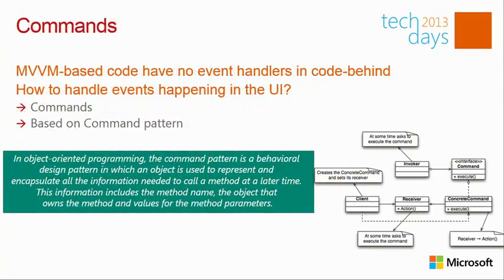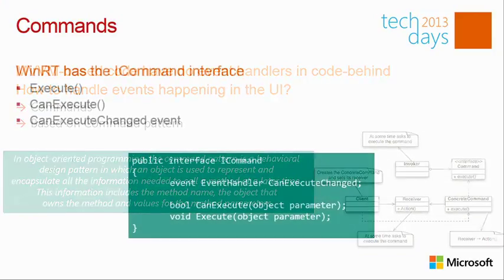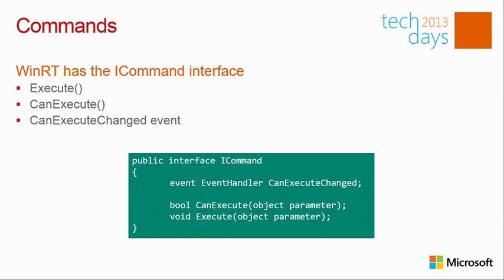We shouldn't have event handlers in code-behind that interact with the model, so we use the Command pattern. A command is basically a class that encapsulates a method to be called at some later time. In Windows 8 we have the ICommand interface, which is simple: it has Execute, CanExecute, and CanExecuteChanged. Execute contains the code to run when a UI event triggers. CanExecute returns true or false on whether the command can be executed, and CanExecuteChanged is an event raised when that value changes.